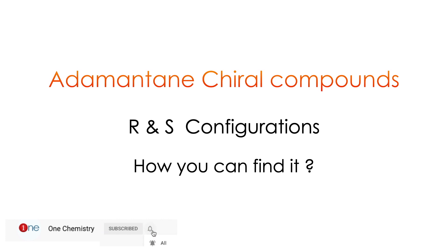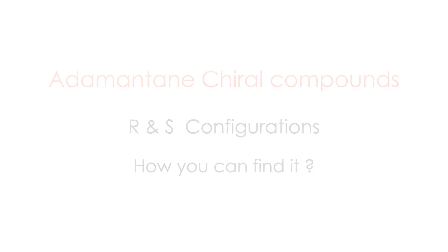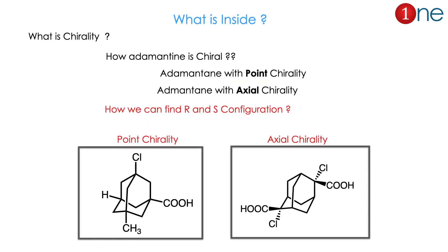We will see the chirality and its R and S configuration, and we will find how we can do it step by step. Inside this video we will see: what is chirality, how adamantane is chiral, adamantane point chirality, and adamantane axial chirality — two types are possible. Then we will see common and representative examples.